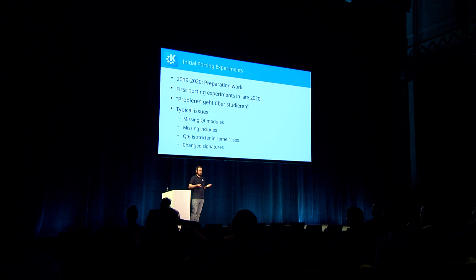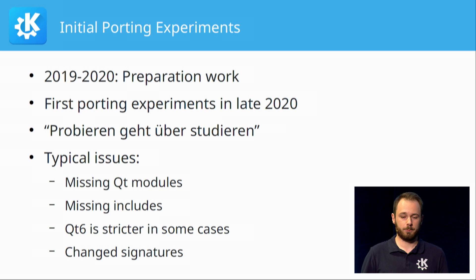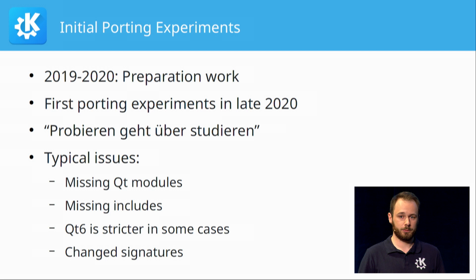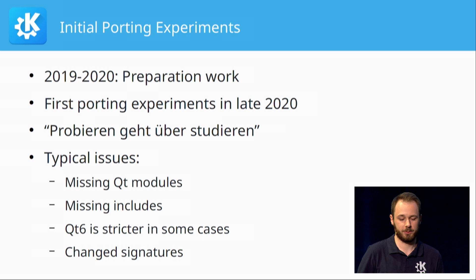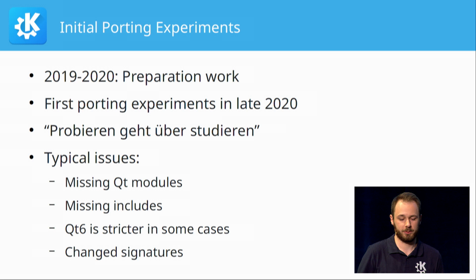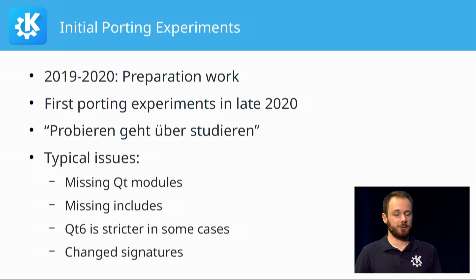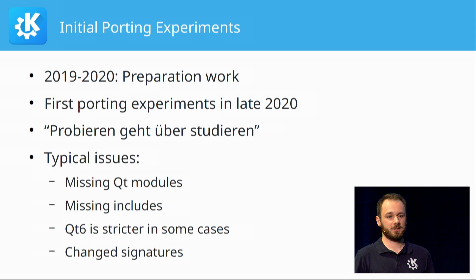The work started in 2019 when Qt 6 wasn't a thing yet, but that didn't mean there wasn't anything to do — we had a lot of deprecated Qt API to port away from, and changes to make to our frameworks according to our design goals. Once Qt 6 was actually a thing, we got curious about how hard it would be to port. In German we have a saying: 'Probieren geht über Studieren' — roughly, trying something out is more effective than thinking about it. So that's what we did: we took Qt 6, threw our application against it, and saw what happened.